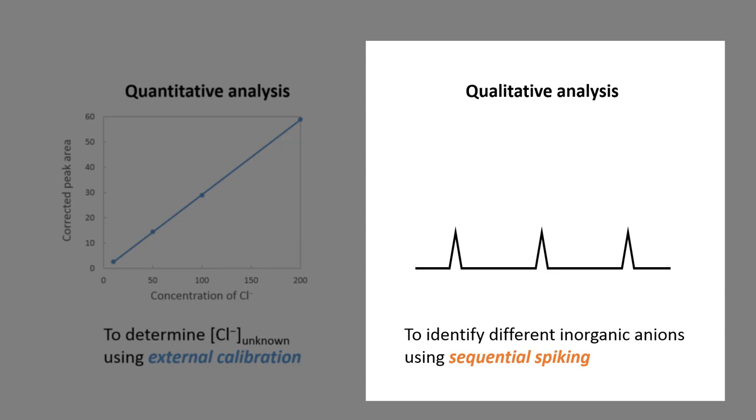So, what is sequential spiking? Let's say if our sample contains three different anions, fluoride, chloride, and bromide. How do we find out which peak is due to which specific anion? To determine the order of anion detection, we can add a small amount of one of the three anions into the solution and perform a second CE measurement.